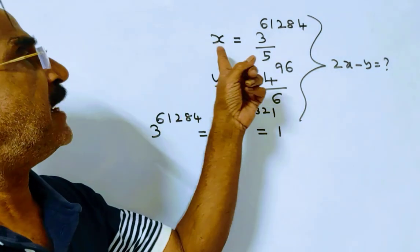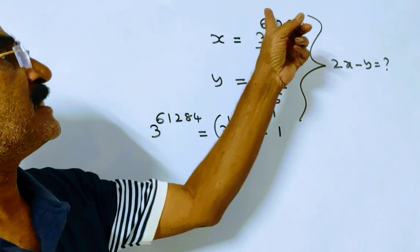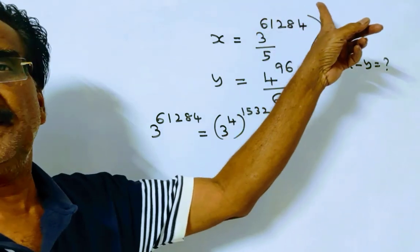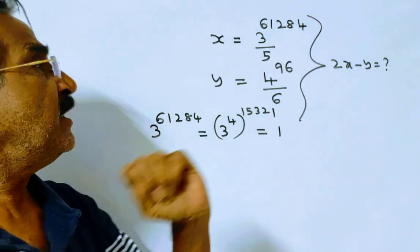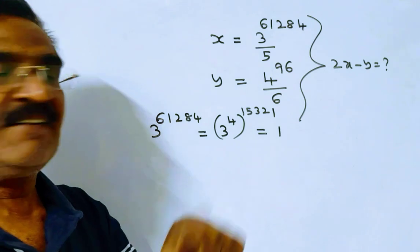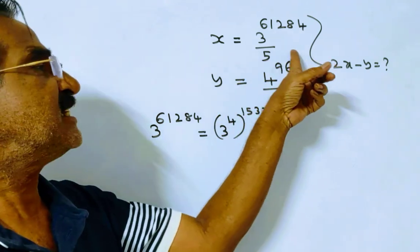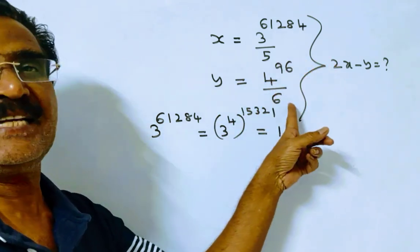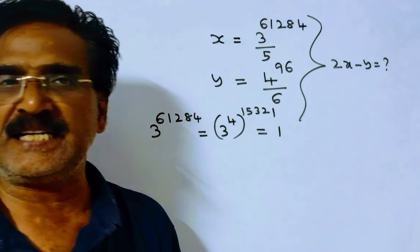x is the remainder when 3 power 61284 is divided by 5, and y is the remainder when 4 power 96 is divided by 6. Then what is the value of 2x minus y?